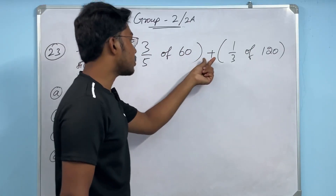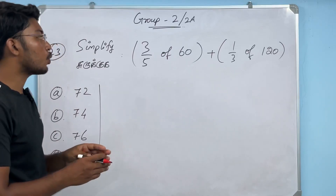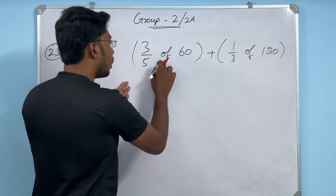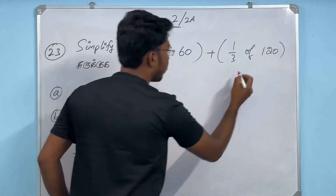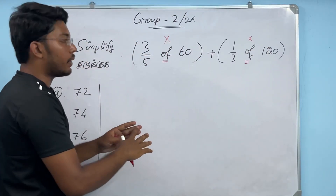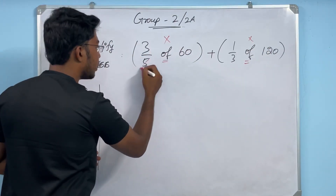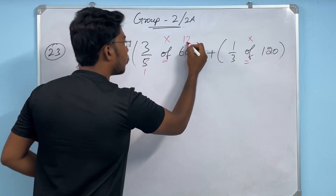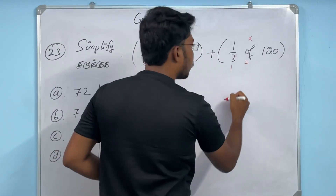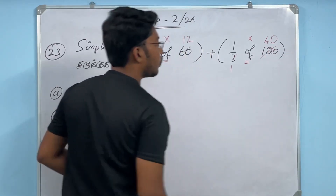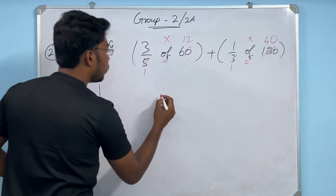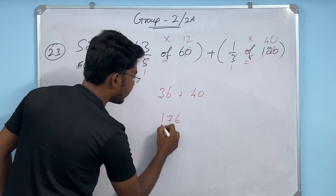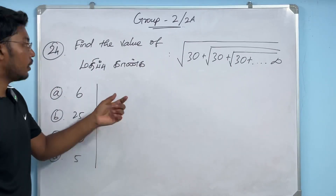Question: 3/5 of 60 plus 1/3 of 120. For 3/5 of 60: 60 ÷ 5 = 12, then 12 × 3 = 36. For 1/3 of 120: 120 ÷ 3 = 40. Adding together: 36 + 40 = 76. Answer: 76.